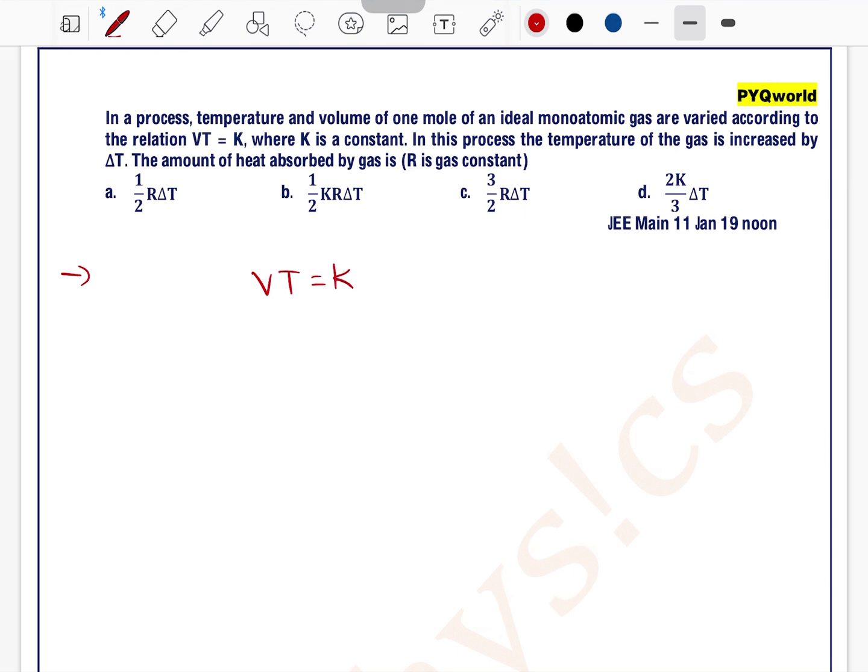The process equation for this process is VT equals constant. Now, this is not a standard polytropic process, so we have to use the equation of polytropic process. For a polytropic process, we know that PV to the power a equals constant. So first we will convert this given equation in terms of PV to the power something equals constant.